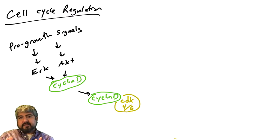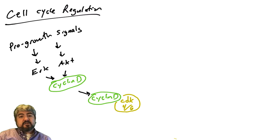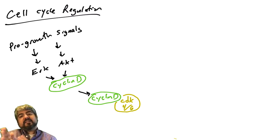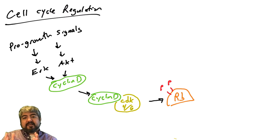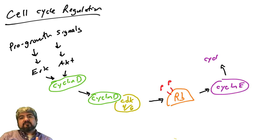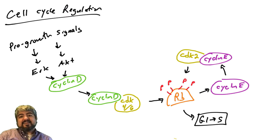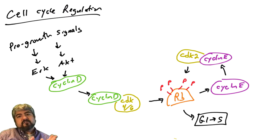We're going to talk about stopping the cell cycle using CDK inhibitors — proteins that halt the cell cycle. Cells typically move from G1 to S phase via an increase in cyclin D protein. Cyclin D binds and activates either CDK4 or CDK6, which phosphorylates RB, the retinoblastoma tumor suppressor protein. This allows production of cyclin E, which binds and activates CDK2, further phosphorylating and inactivating RB in a positive feed-forward loop, pushing cells from G1 into S phase.